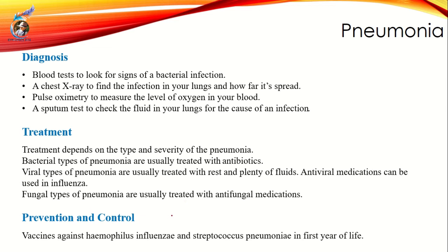Prevention and control: vaccination is an important prevention measure for both children and adults. Vaccines are available against Haemophilus influenzae and Streptococcus pneumoniae, and these vaccines are very helpful to control pneumonia.